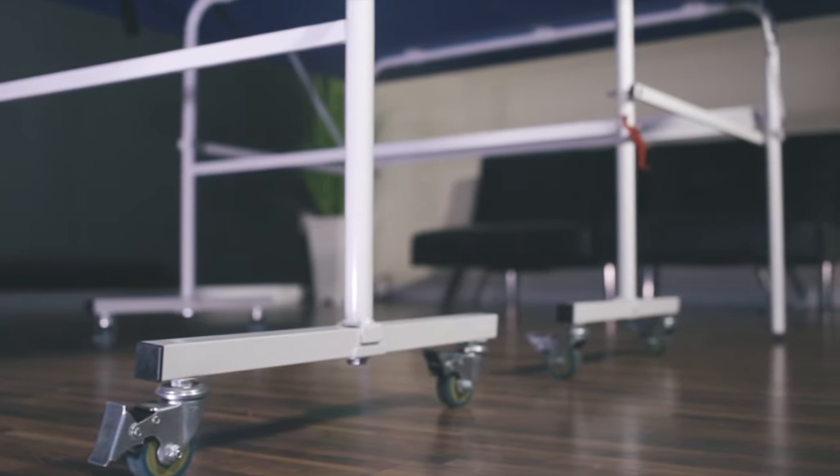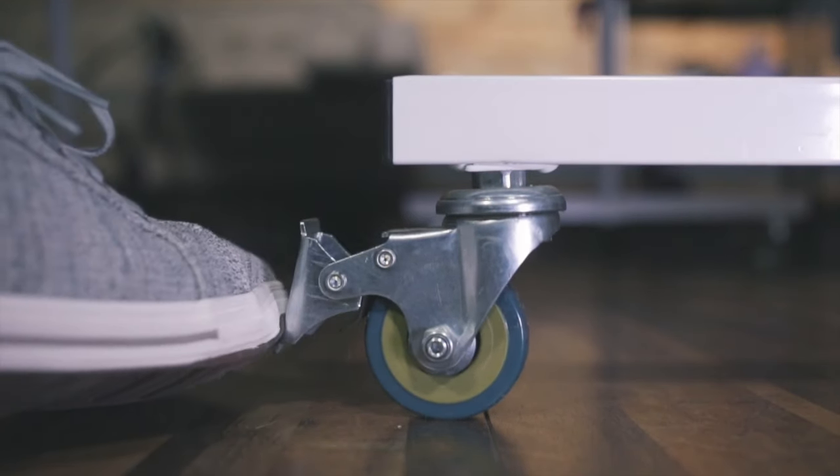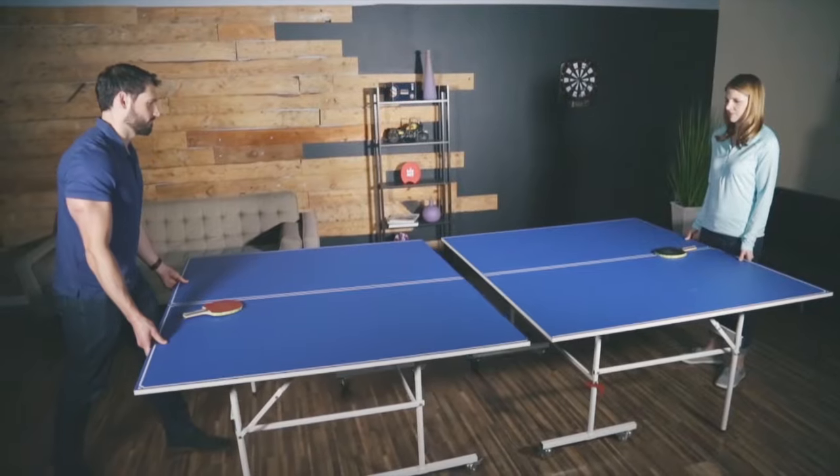The Yola Quadri table has sturdy steel legs and four two-inch locking caster wheels per table half, providing added safety during play, transport, and storage.